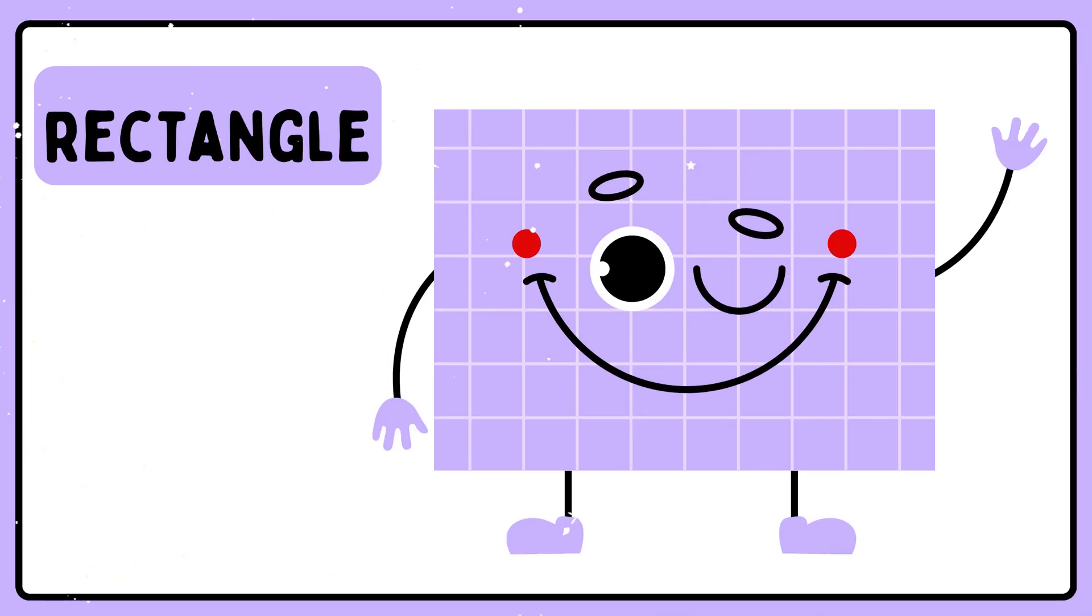A rectangle. This is a rectangle. Rectangle has four sides and four corners. The opposite sides of a rectangle are equal.